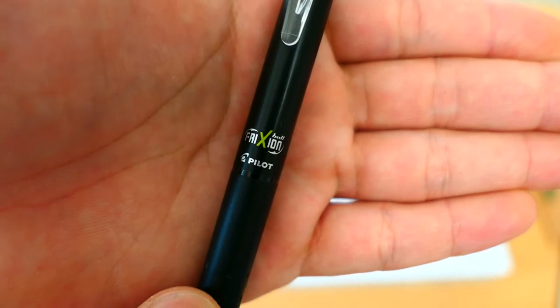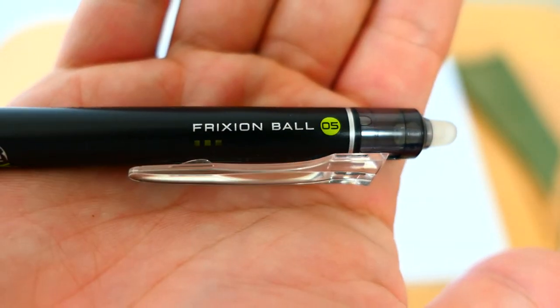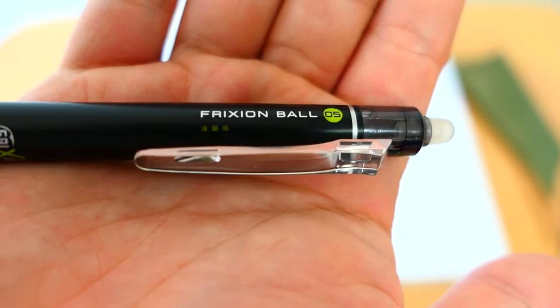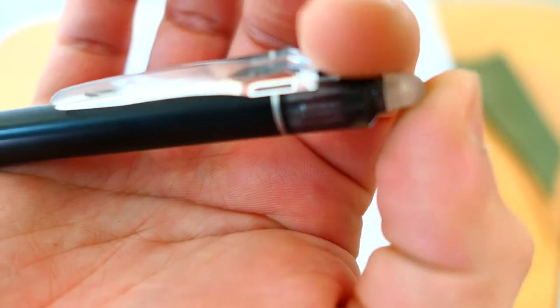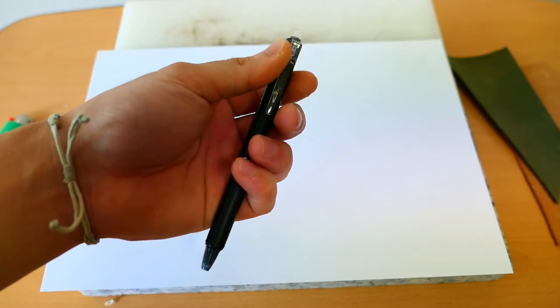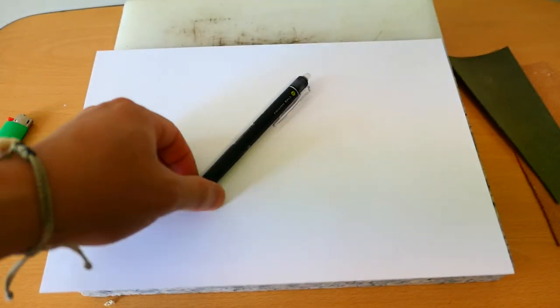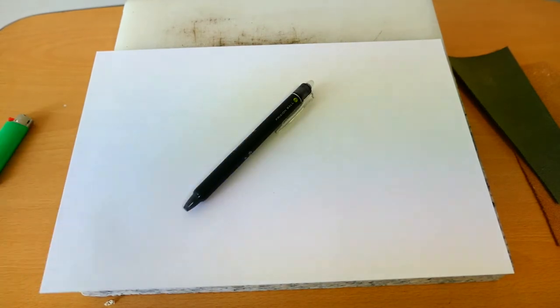The name is Frixion Ball. Here it says Frixion Ball, 0.5mm of thickness. And it has a rubberized tip. It's not a razor, but I'm going to show you what it does. So it looks like a typical pen. It doesn't seem like nothing special, but there's a special feature in this pen. The ink is very special.